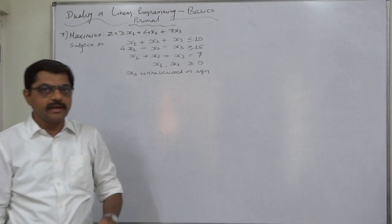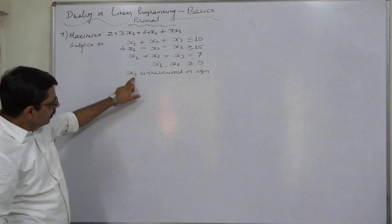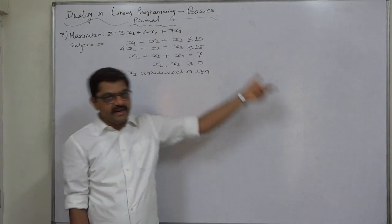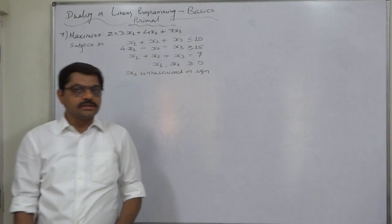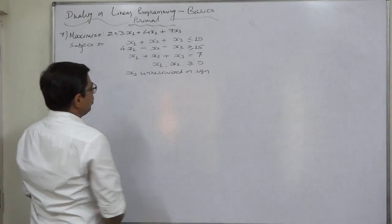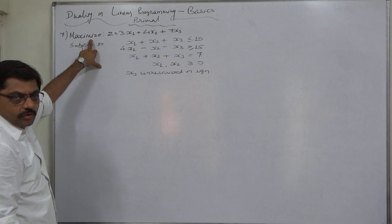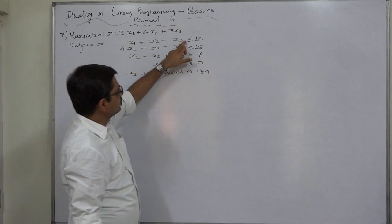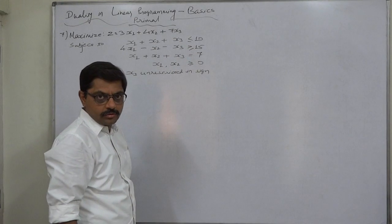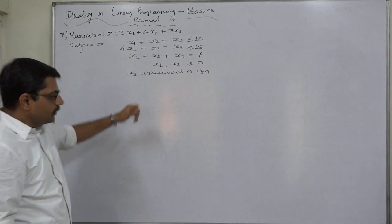Now, be clear: at constraint number three there is equality, so in the dual exactly the third variable must be unrestricted in sign. Similarly, since the third variable in the primal is unrestricted in sign, in the final dual the third constraint must be equality. For the objective of maximization, the first constraint sign matches, but the second and third do not — we have to revise the primal.